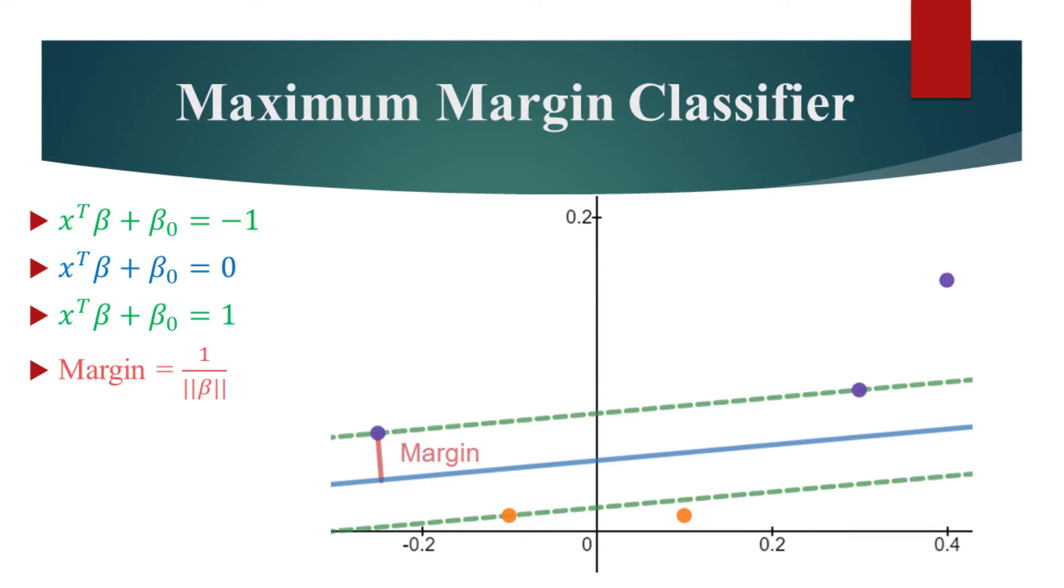The green dashed lines are equidistant from the decision boundary, and that distance is called the margin. The points in the data that touch the margin are called the support vectors. For example, here we have two violet and one orange support vectors. The rest of the training data has to be outside the margin.